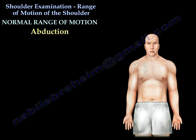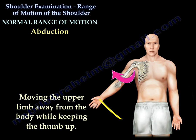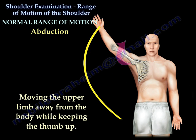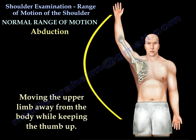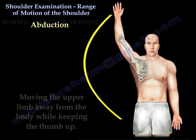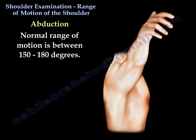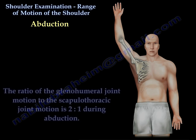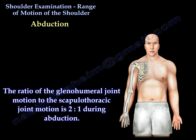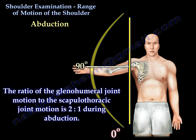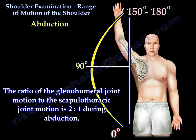With normal abduction of the shoulder, the upper limb is moved away from the body while keeping the thumb up. The normal range of motion is between 150 and 180 degrees. The ratio of the glenohumeral joint motion to the scapulothoracic joint motion is 2 to 1 during abduction.